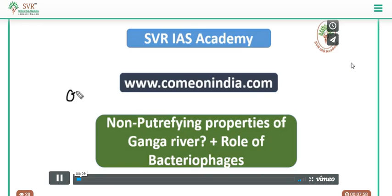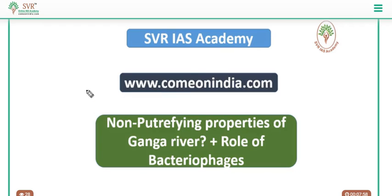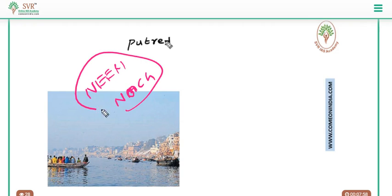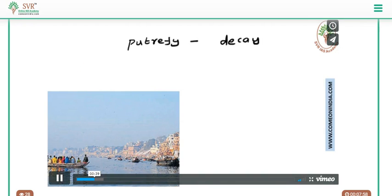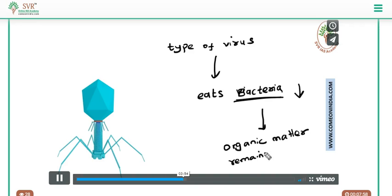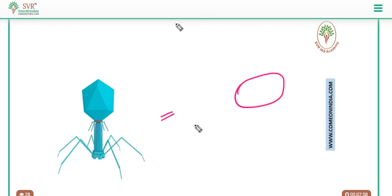Recently the National Commission for Ganga River constituted a committee to study the non-putrifying character of the Ganga river. We also explained about the National Mission for Clean Ganga and the possible reason for the non-putrifying character, especially bacteriophages. Bacteriophages are a type of virus that eats bacteria, and we also linked the use of bacteriophages in controlling drug-resistant bacteria, especially for tuberculosis.